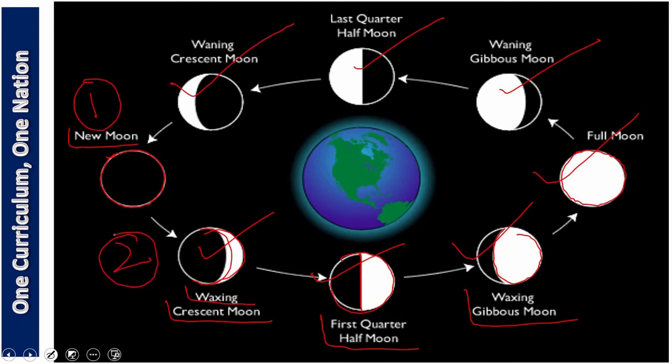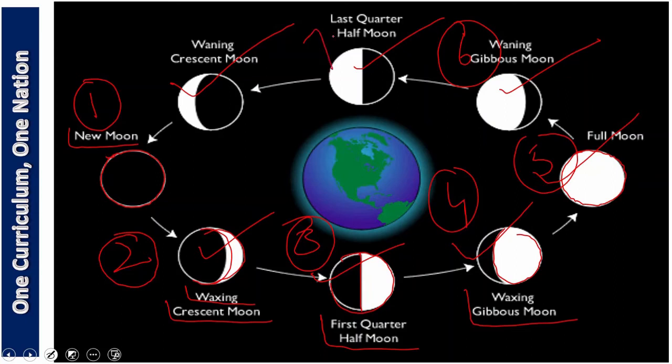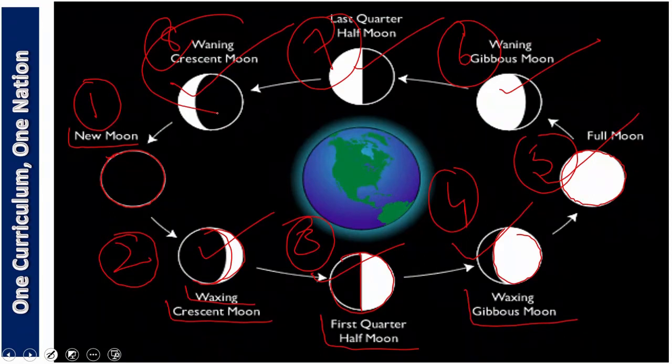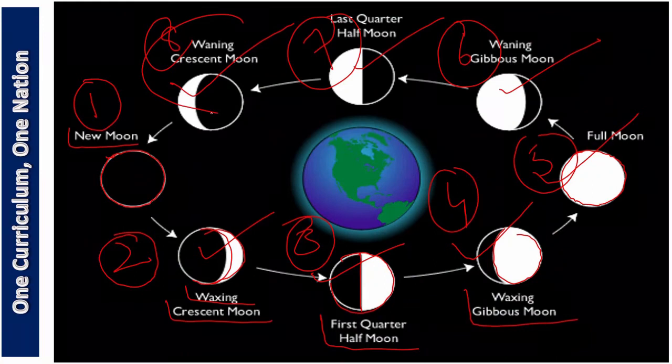Waxing crescent number three, first quarter number four, waxing gibbous number five, full moon number six is waning gibbous moon, and number seven is last quarter half moon, and number eight is waning crescent moon. So my dear students, don't forget it.